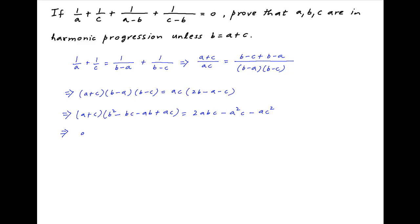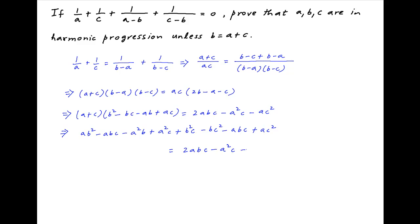Opening up the left-hand side, this becomes ab squared minus abc minus a squared b plus a squared c plus b squared c minus bc squared minus abc plus ac squared. This is equal to the right-hand side, which is 2abc minus a squared c minus ac squared.